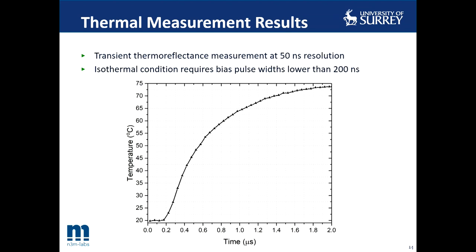In order to determine the pulse width necessary to completely avoid self-heating, a transient thermal reflectance measurement was performed. We measured the temperature across a 2 microsecond pulse width with 50 nanosecond temporal resolution, while the GaN transistor was biased at a gate voltage of minus 1 volt and drain voltage of 25 volts. From the measured results, the operating temperature remains at 20 degrees Celsius — the ambient temperature — only for the first 200 nanoseconds, meaning the device does not experience any self-heating during that window. Therefore, for truly isothermal measurements, pulses less than or equal to 200 nanoseconds would be required.